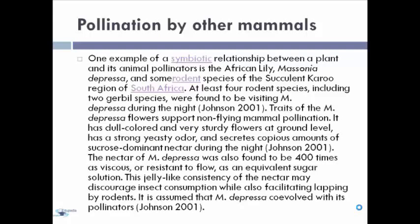One example of a symbiotic relationship between a plant and its animal pollinators is the African lily Massonia depressa and rodent species of the Succulent Karoo region of South Africa. At least four rodent species including two gerbil species have been found visiting M. depressa during the night. Traits of M. depressa flowers support non-flying mammal pollination: it has dull-colored, very sturdy flowers at ground level, a strong yeasty odor, and secretes a copious amount of sucrose-dominated nectar during the night. The nectar of M. depressa was found to be 400 times as viscous as an equivalent sugar solution, and this jelly-like consistency may discourage insect consumption while facilitating lapping by rodents. It has been shown that M. depressa co-evolved with its pollinators.